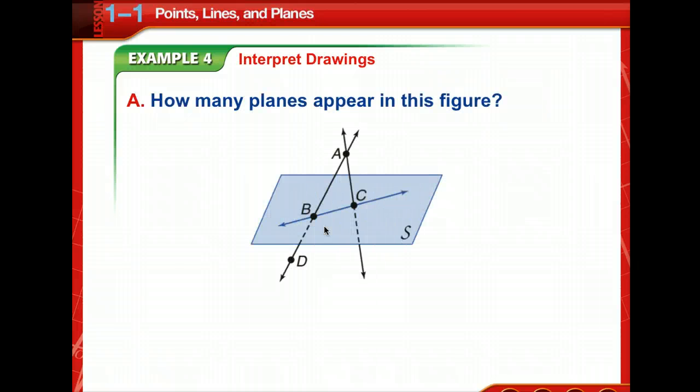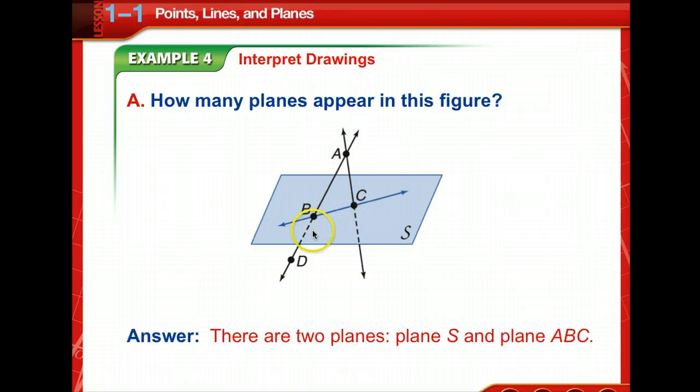How many planes appear in this figure? Now don't just look at the blue plane that they've drawn. You're going to pick up other planes. Remember it takes three non-collinear points to name a plane. So we have this plane S. But what about this plane formed by A, B, C? See that triangle standing up? If you look at the face of that, isn't that a plane also? Yeah. So there's two planes. There's plane S and there's plane A, B, C. So just because it's not drawn in, don't forget to look at that. Three points that are not on the same line. Make that plane.